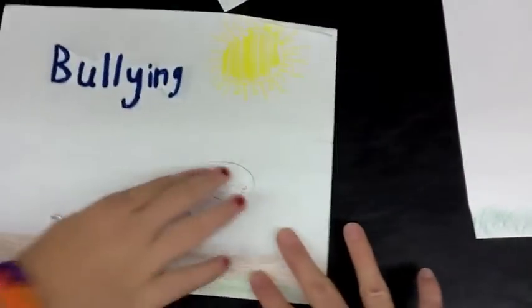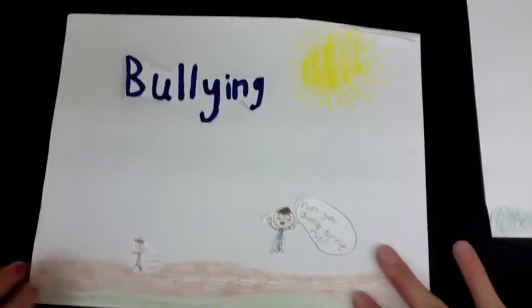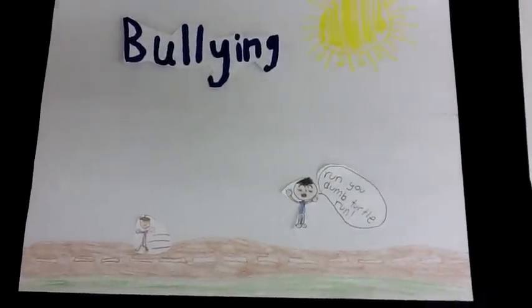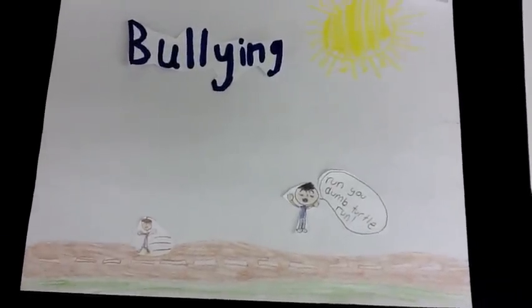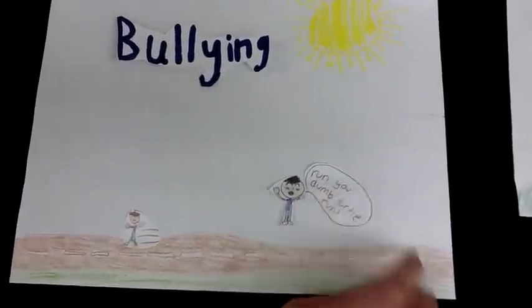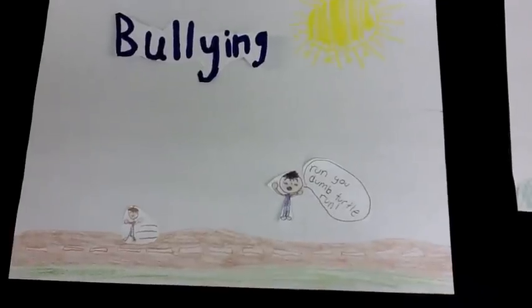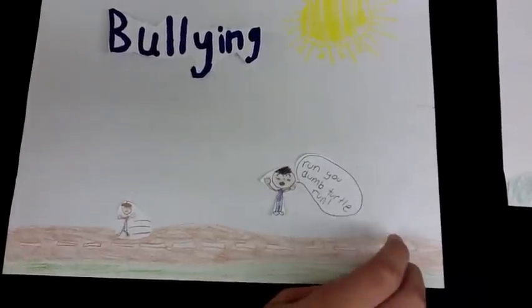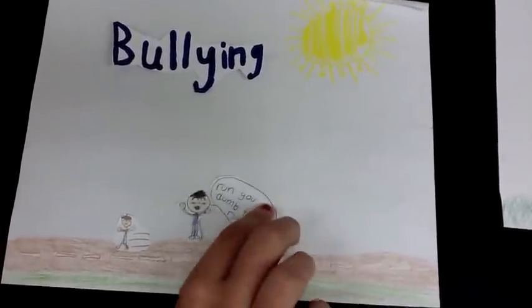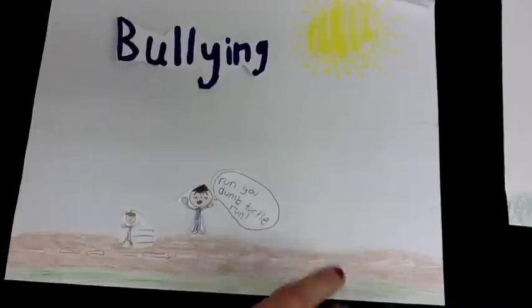Most of the book addresses the problems of bullying. In this scene, you will see Zinkoff being a victim of bullying. Run, you dumb turtle, run!